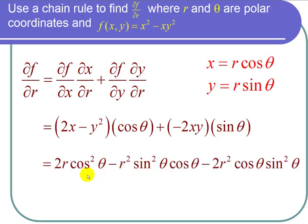The final answer is ∂f/∂r = 2r cos² θ - r² sin² θ cos θ - 2r² cos θ sin² θ. And I'm done with the problem.